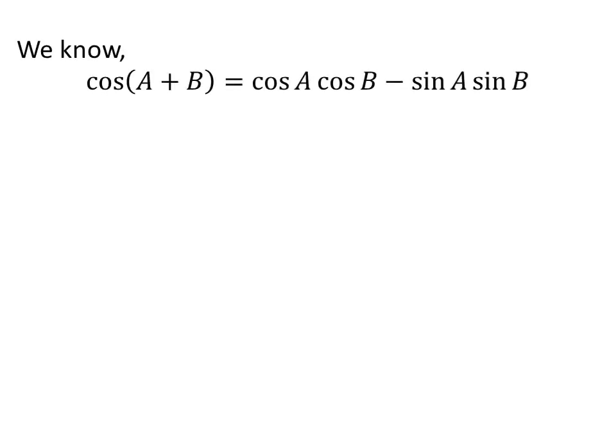We know the famous trigonometry identity: cosine of a plus b is equal to cosine of a times cosine of b minus sine of a times sine of b.